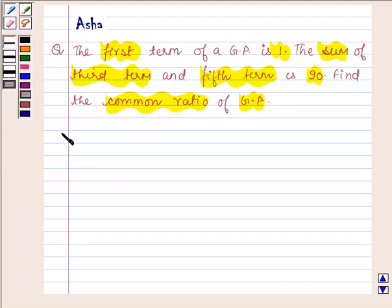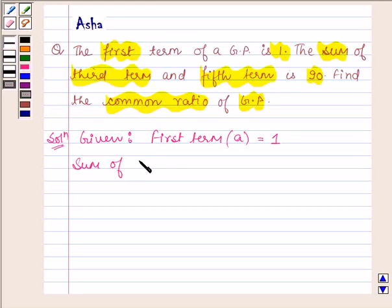Let us now begin with the solution. Here we are given that the first term, let us denote it by a, is equal to 1 and the sum of third term and fifth term is equal to 90.